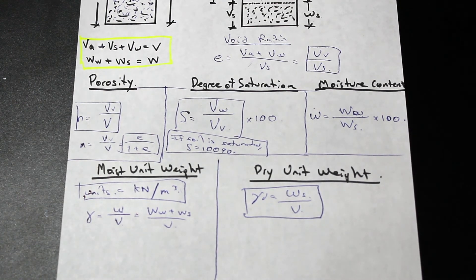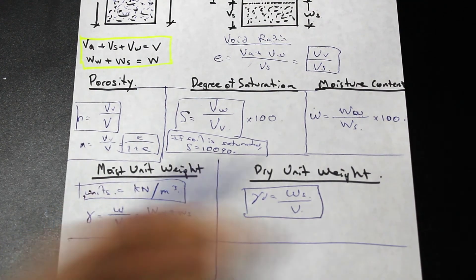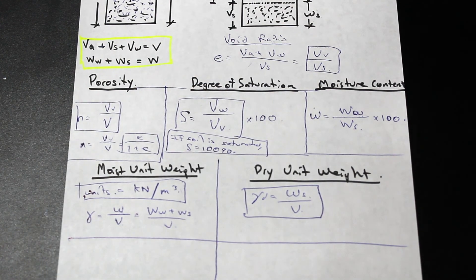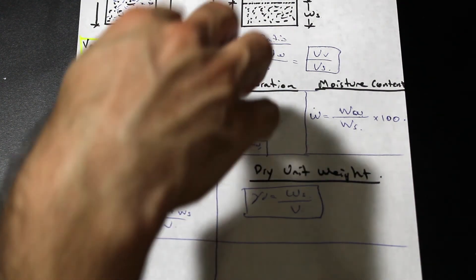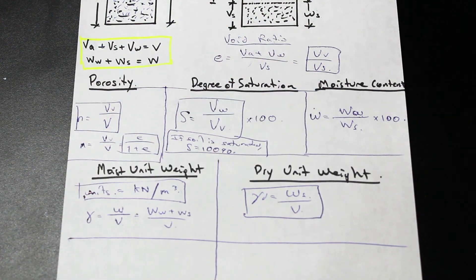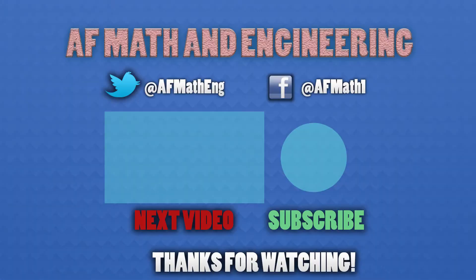That's pretty much it — some really basic introductory material on phase diagrams and what these things are: void ratio, porosity, degree of saturation, and so on, because you'll see these coming up all the time. In order to do well in this course, you're going to need to understand these. Maybe we'll do another video where we derive some of these, but the next video will definitely be solving some questions using these formulas. Thanks for watching, guys, and as always, like and subscribe.